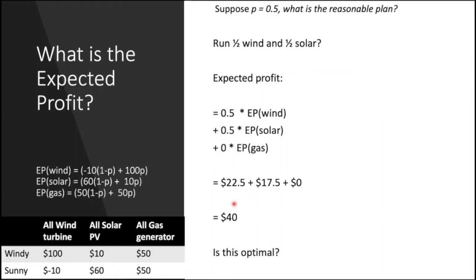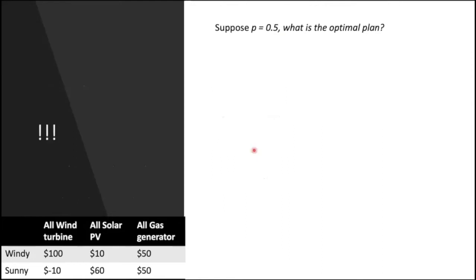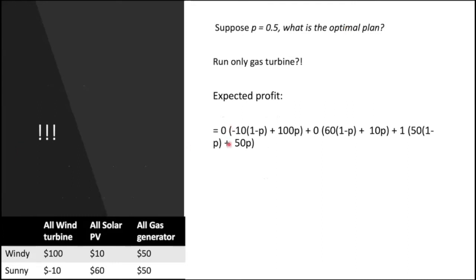Now let's figure out if $40 is an optimal solution. If we use just the gas turbine, then the expected profit is 1 multiplied by the expected profit of gas, which equals $50. So using only gas gives us $50 versus $40 for the half-and-half strategy.